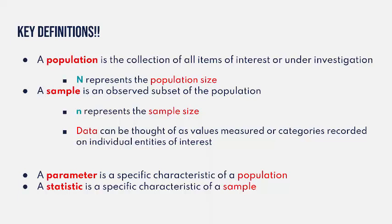A sample is an observed subset of the population. It's not complete information — it's just a smaller amount taken from a population. We let lowercase n represent the sample size. Data can be thought of as values measured or categories recorded on individual entities of interest — the values that you record when you take that sample from the population, or the values of the population themselves.